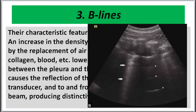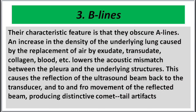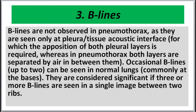An increase in the density of the underlying lung, caused by the replacement of air by exudate, transudate, collagen, or blood, lowers the acoustic mismatch between the pleura and the underlying structures. This causes reflection of the ultrasound beam back to the transducer, producing distinctive comet tail artifacts.